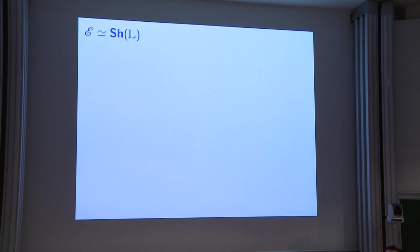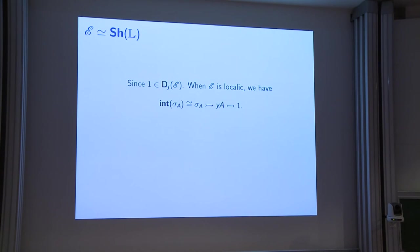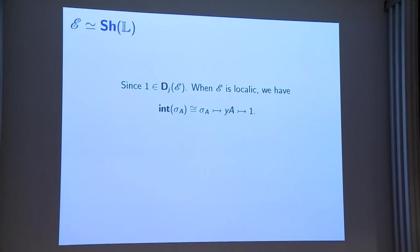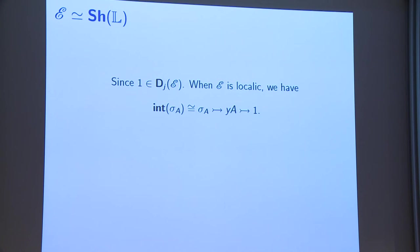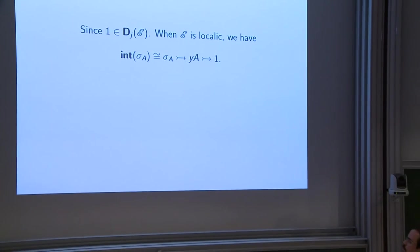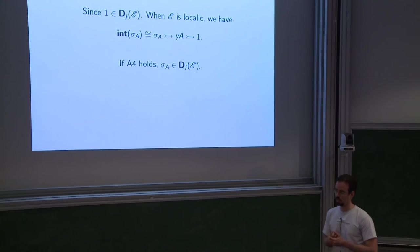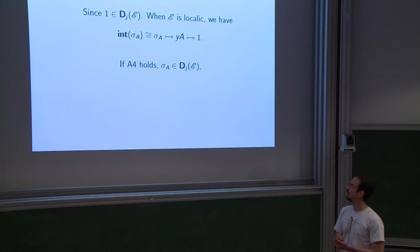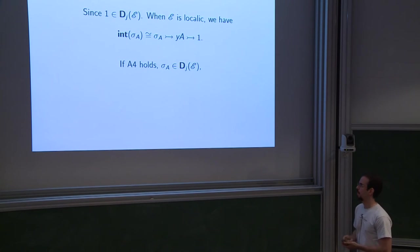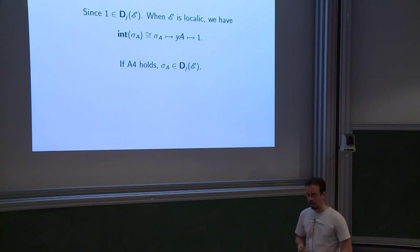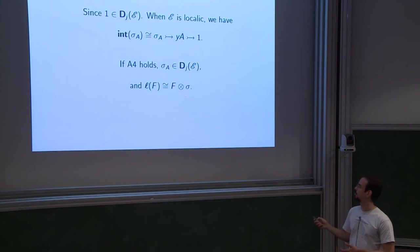Let's look at what happens when we take our topos to be sheaves on a locale — a locale topos. In this case, since one is always discrete, you can easily check it satisfies the diagram for an object being discrete. When E is a locale topos, the interior of sigma_a is sigma_a again, because sigma_a is the interior of Y(a), and it's a sub-object of Y(a) — the representable — which is a sub-object of one. So if axiom four holds — that an open sub-object of a discrete object is discrete — then your smallest covering sieve is discrete, and from there it becomes very easy to construct your left adjoint L. Your left adjoint L is just tensoring with sigma — the left Kan extension along the Yoneda embedding of sigma.